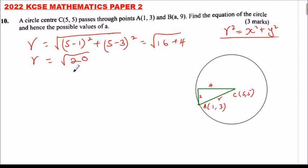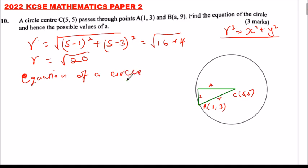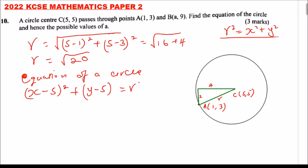When the center of the circle is not at the origin, the equation of the circle is: (x minus 5) squared plus (y minus 5) squared equals r squared. That is the general equation of the circle when the center is not at the origin.